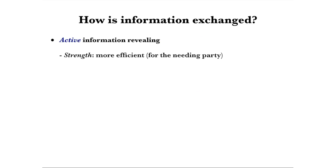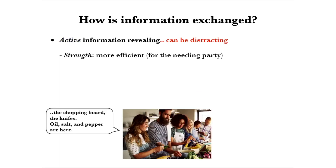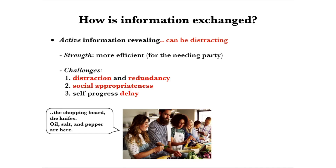With such situation in mind, the provider agent can then actively reveal information to save the effort for the party in need. However, active revealing is challenging. The side effect is that it can distract ongoing interaction. Take a daily human interaction example: when managing a cooking event at one's house, the host often first introduces the kitchen environment. If the host introduces way too many items, the information can distract ongoing conversation, task progress, and can lead to the perception of inappropriate social interaction to the information-receiving party. Such behavior may also delay the revealing party's own progress.